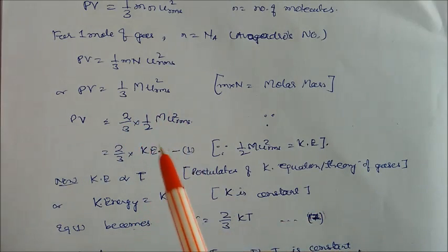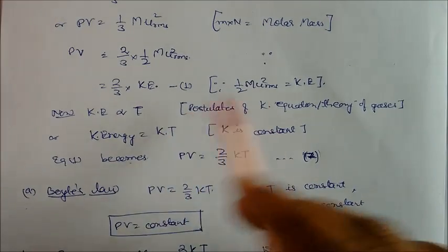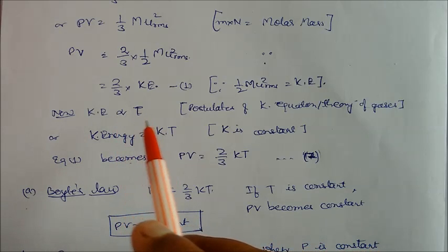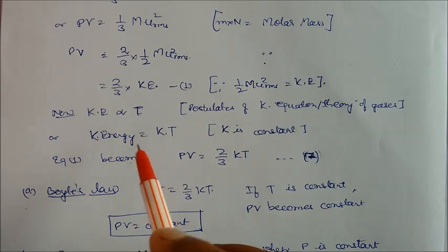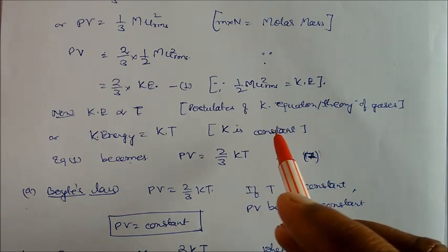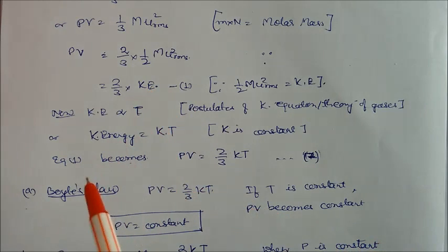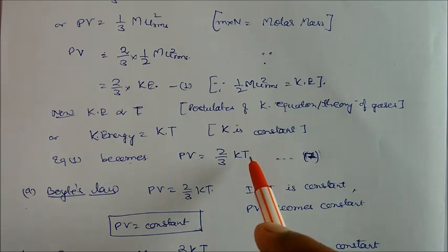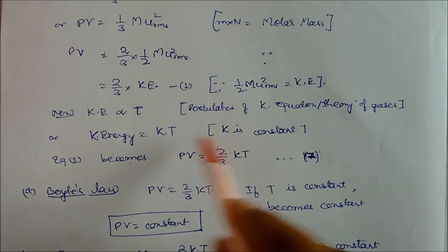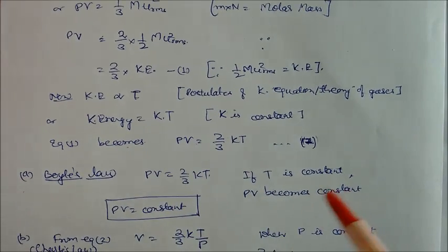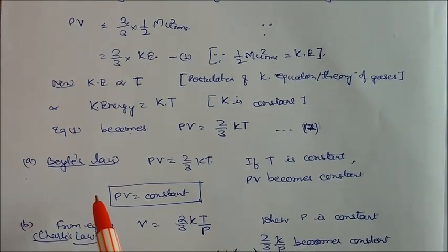The term (1/2) × M × u_rms² is nothing but the kinetic energy. From the postulates of kinetic theory, kinetic energy is proportional to temperature: KE ∝ K × T, where K is a constant. Substituting this into the equation gives pV = (2/3) × K × T, which is the fundamental equation derived from kinetic theory.